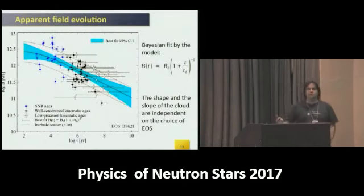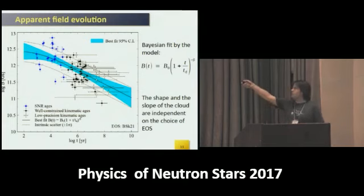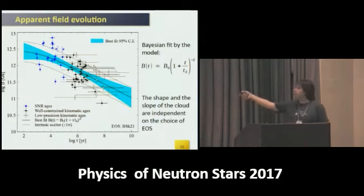This is our main numerical result: the correlation between magnetic fields over ages for our 76 pulsars. Error bars along the B axis are defined by the distribution of delta B correction, and error bars along the T axis are defined by the distribution of kinematic ages and ages of supernova remnants.